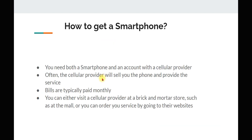How to get a smartphone. You need both a smartphone and an account with a cellular provider to fully use all of the functions on that phone. Often the cellular provider will sell you the phone and provide the service. Bills are typically paid monthly. You can either visit a cellular provider at a brick-and-mortar store, such as at the mall, or you can order your service by going to their websites.